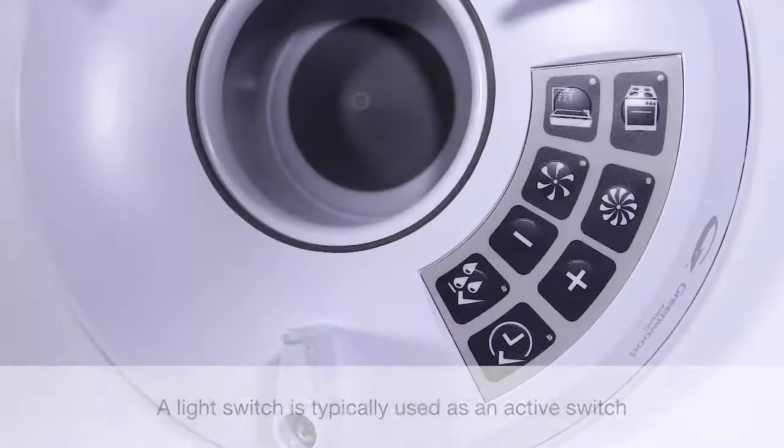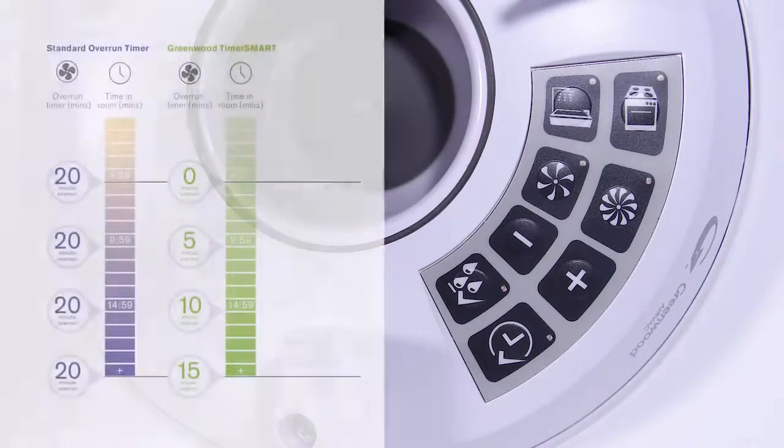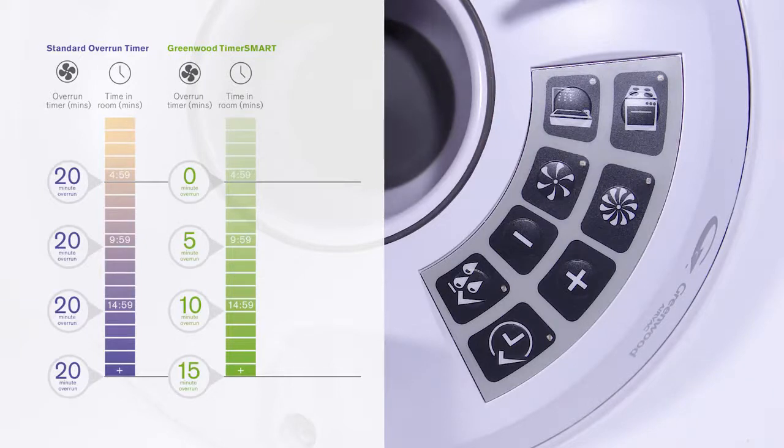The TimerSmart monitors the length of time the unit has been in boost mode via an active switch. Once the switch is deactivated, the TimerSmart overrun period should continue to run the unit for a calculated time in boost. The first five minutes should not activate an overrun.